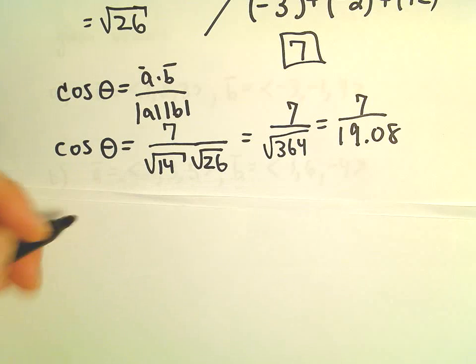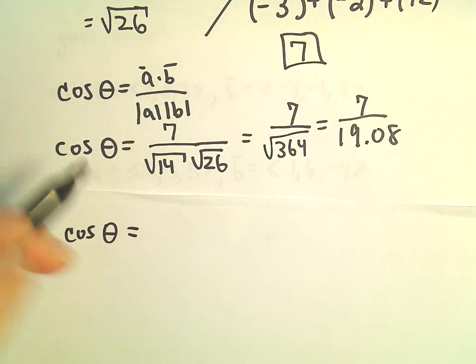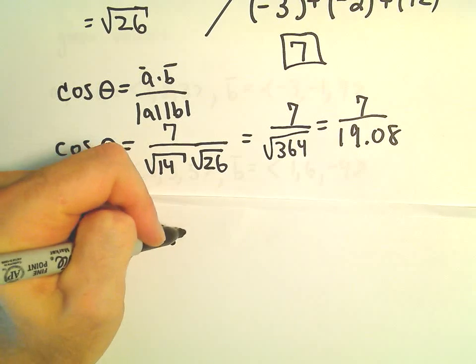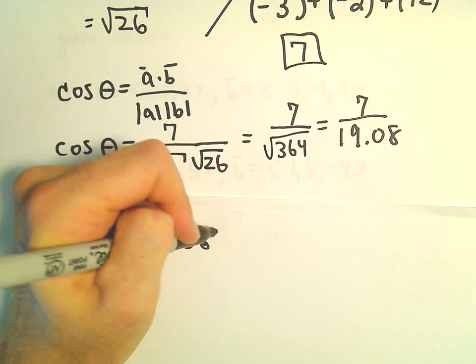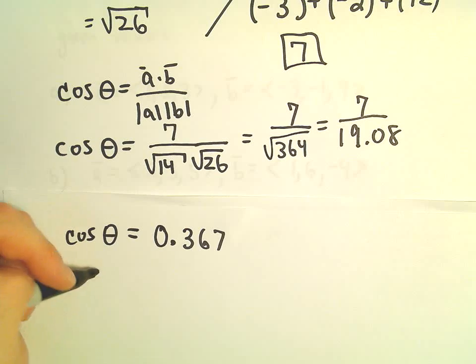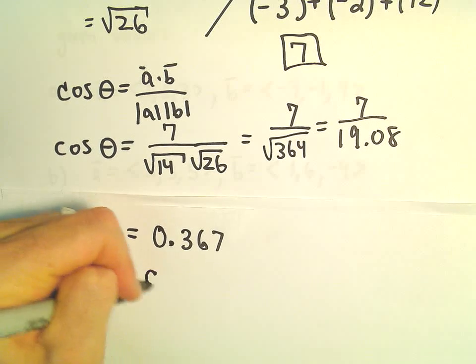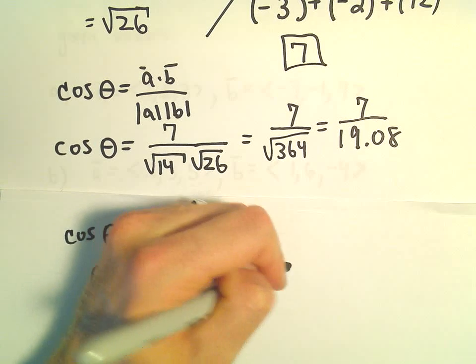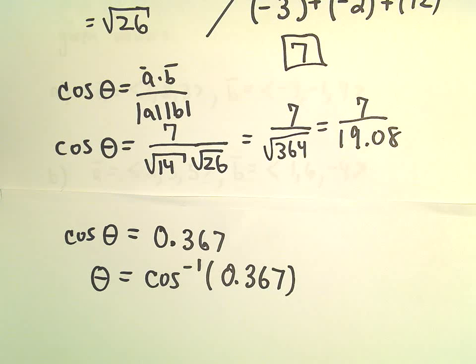Alright, so we're almost there. We've got cosine of theta equals 7 divided by 19.08. So that's going to give us 0.367 after rounding. And then to figure out the angle, we'll just do inverse cosine of both sides.